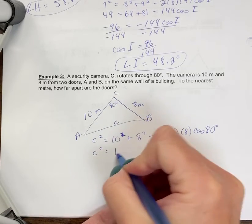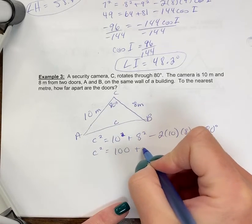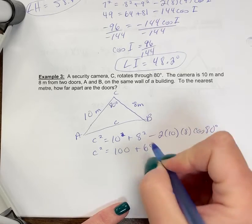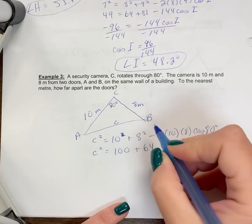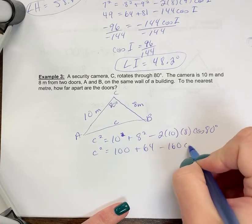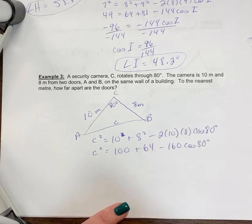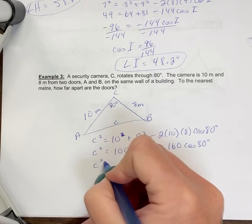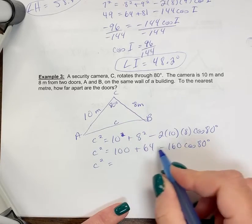So C squared equals, when I do the calculations on this, now your calculator actually would let you probably put all this in. But I find if it's numbers that are small enough to square or multiply, it's a good idea just to make sure we have that in there. I put this in my calculator. So I add this minus this.